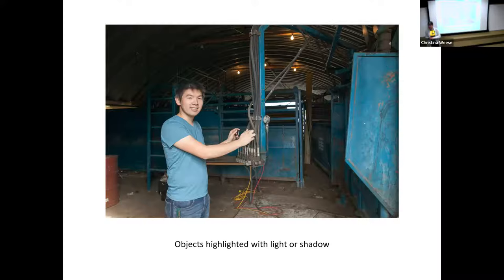Objects highlighted with light or shadow is another way to tell a story. So in this photo, if you have to take a picture of a person in a dark building, a great way to do it is to stand them in the doorway and let the light fall on them. He's highlighted in this case, along with the piece of equipment that he's working with.